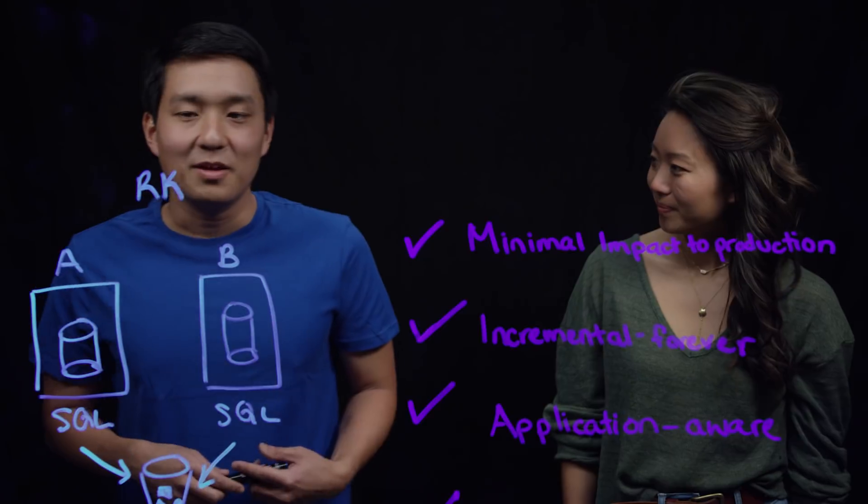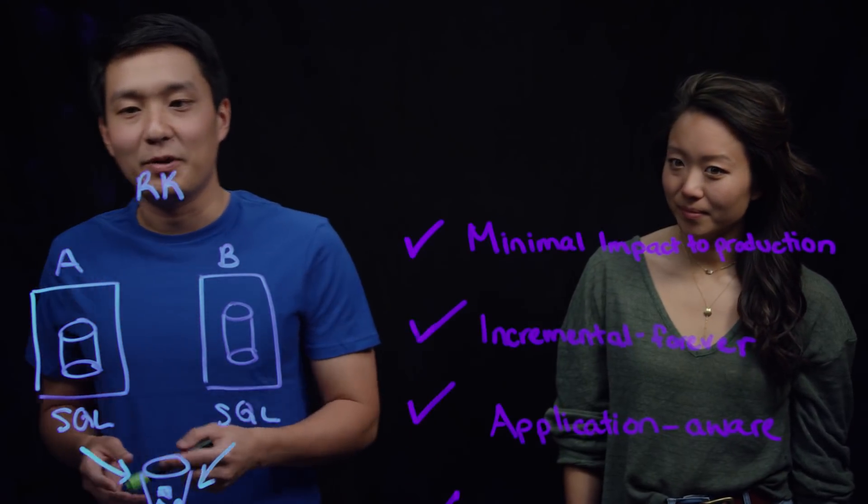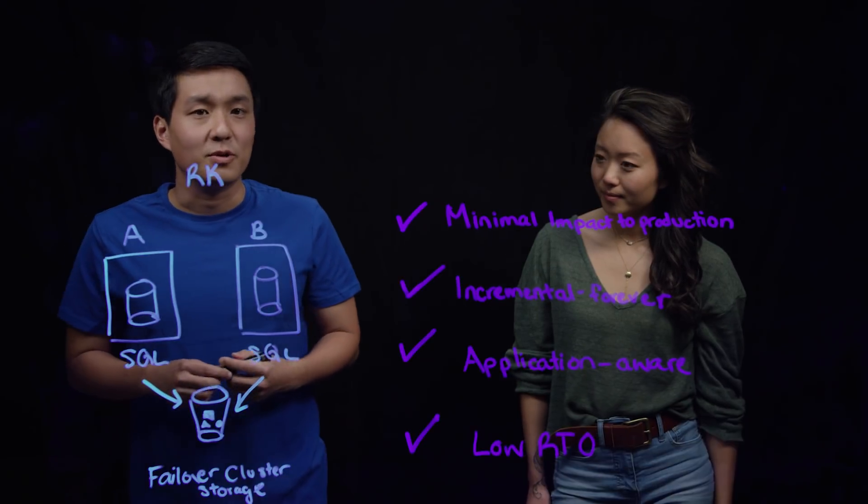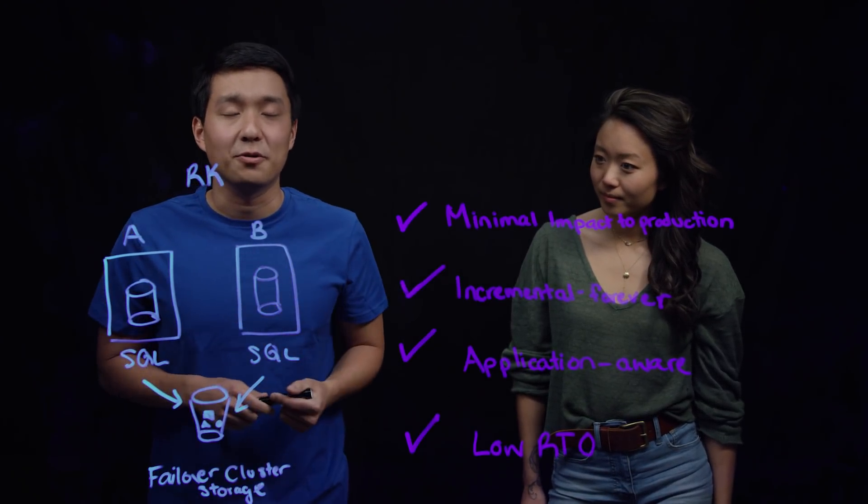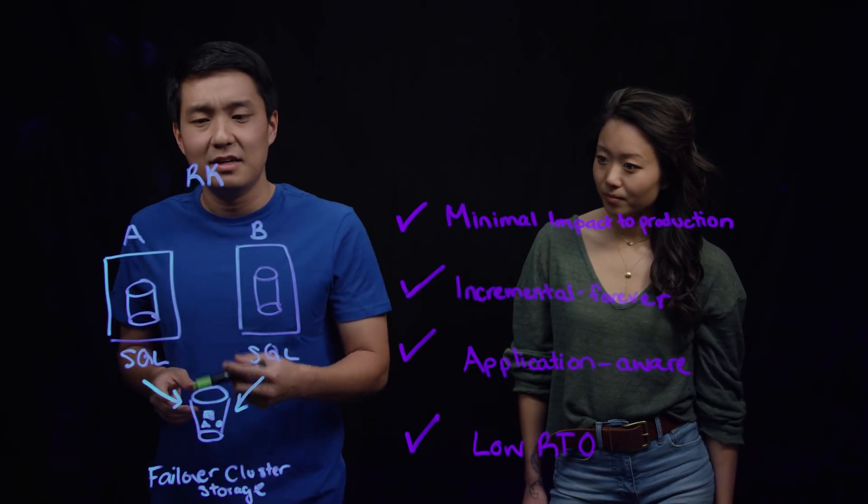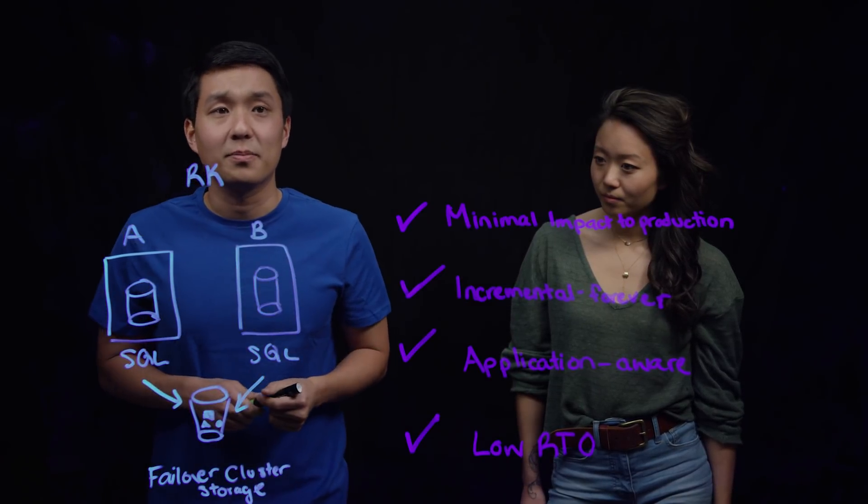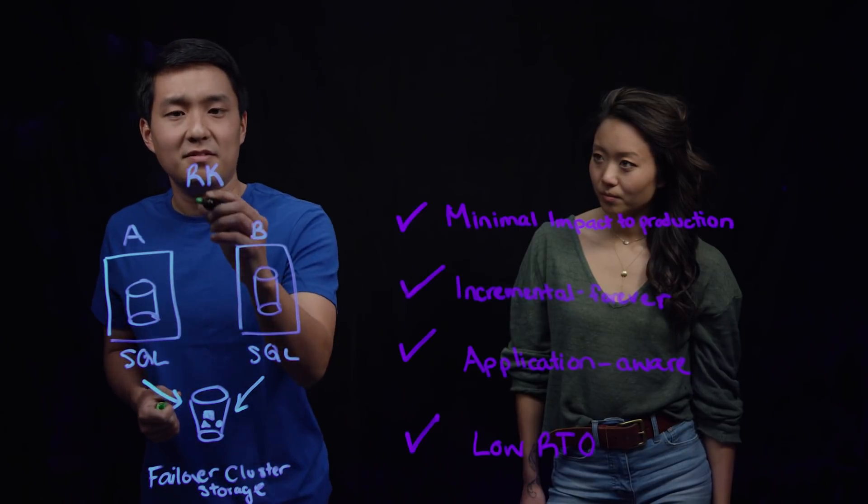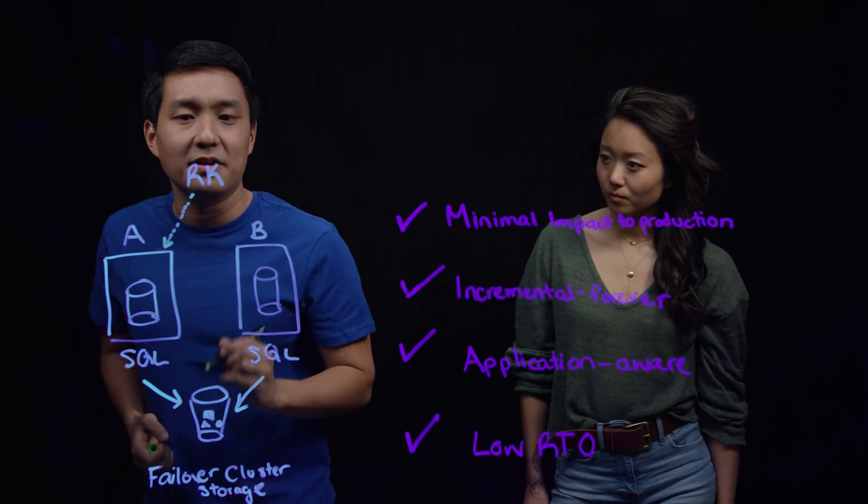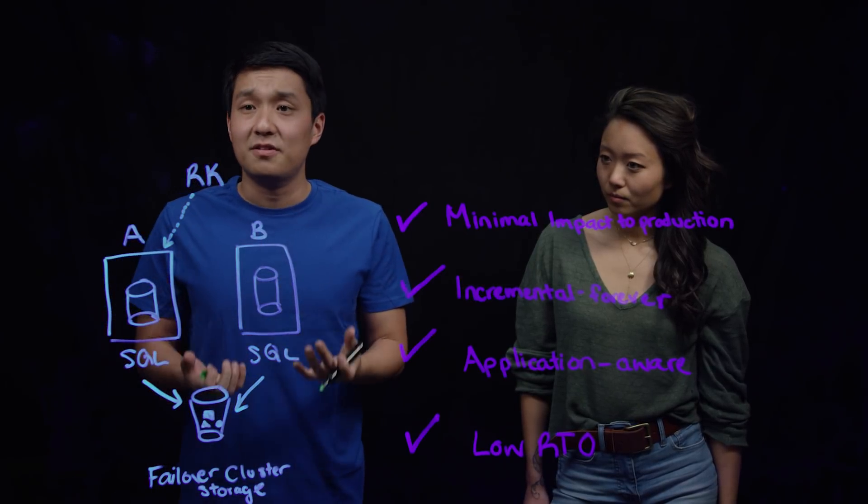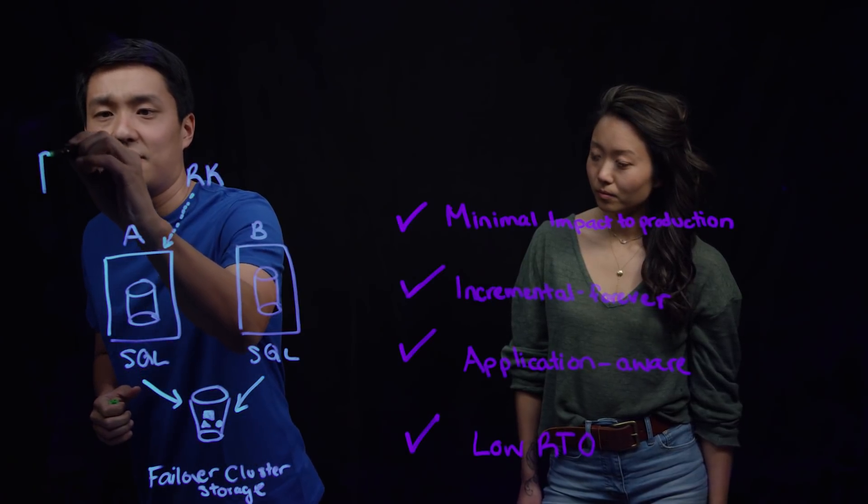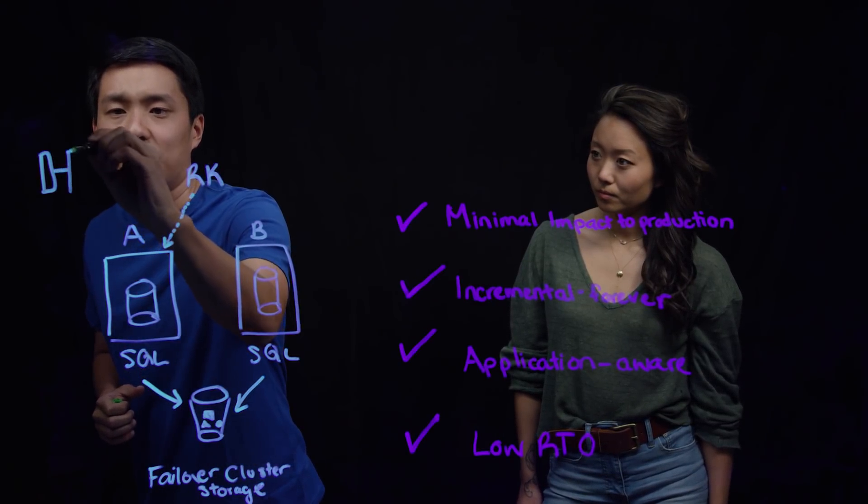Sure. Say we have a Failover Cluster, and we have nodes A and B, which are a part of this cluster. When Rubric is connected to both of these nodes, we will detect the Failover Cluster instance and any databases that are a part of it. So, let's say we are first primarily communicating with the database at node A. If we set an SLA policy on this database, we will start taking backups and transaction log backups as normal.